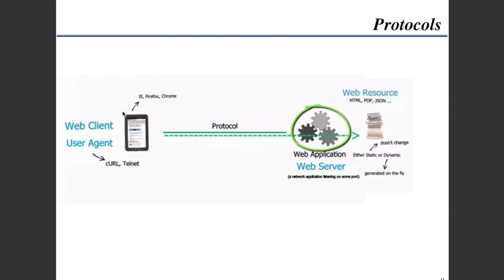Looking in a little more detail, we can see we have our browsers. We have a few command line tools — you can use curl and telnet to do GET requests and PUT requests — but the browser is generally the way that most of us access the web. Then we have our web server. Web and application server are a lot of times combined into one thing. Here we have web resources: HTML pages, PDFs, JSON, XML, and it can be either static or dynamic content that sits on your application server.